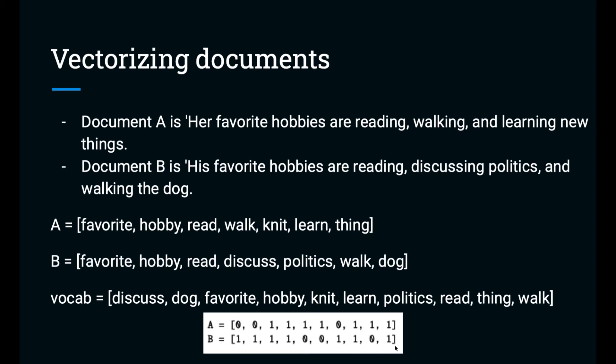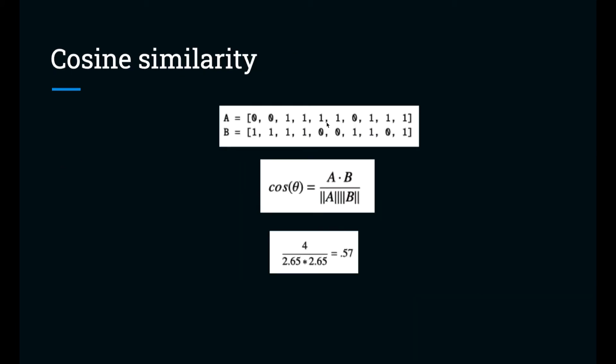These look like binary vectors since our corpus is so small, but really we did use counts. Here's A and B again. And now we're going to compute the cosine similarity. This is computed as the dot product of the two vectors, normalized by the vector norms.